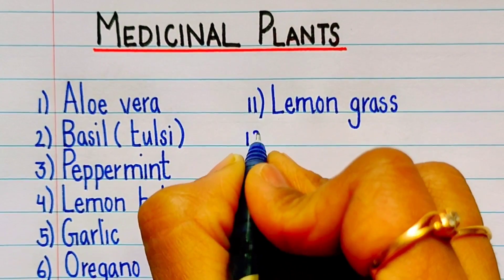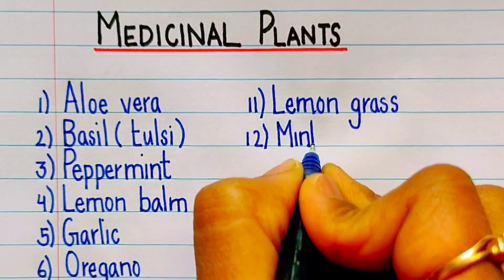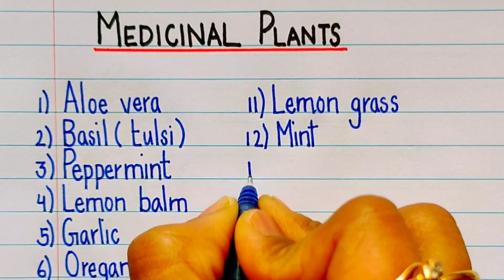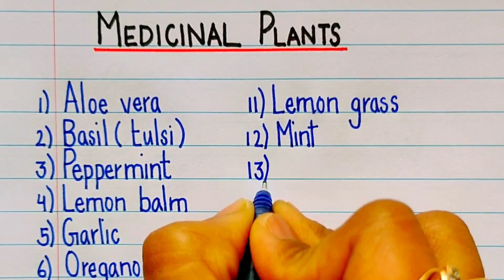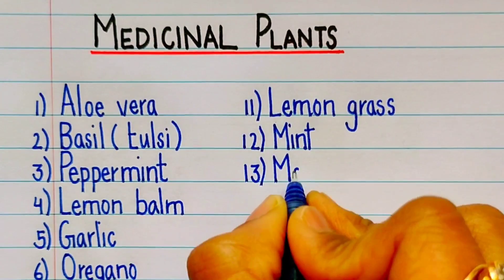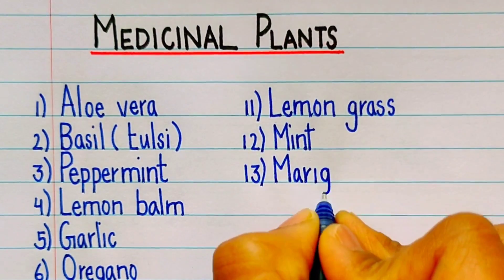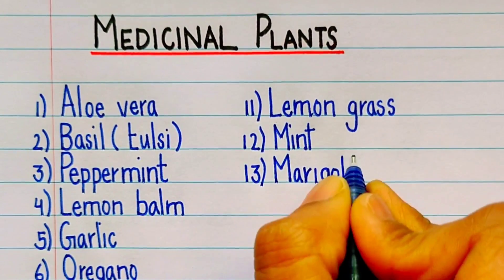Twelfth one is mint, M-I-N-T. Thirteenth one is marigold, M-A-R-I-G-O-L-D.